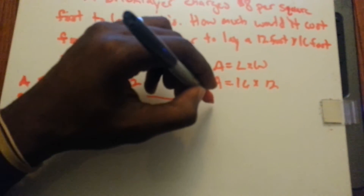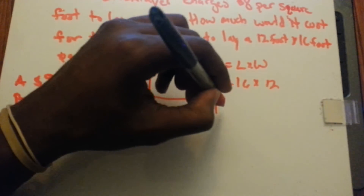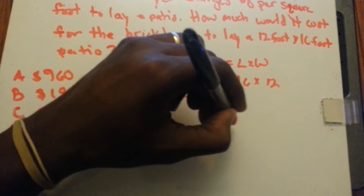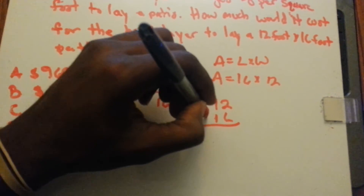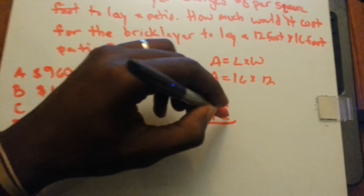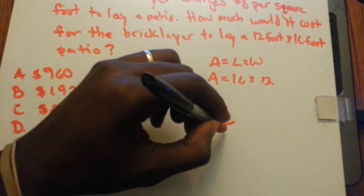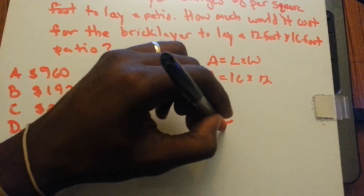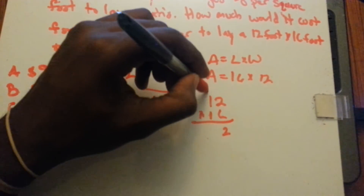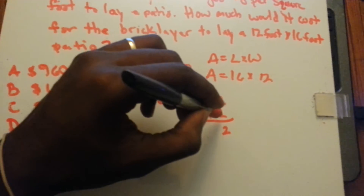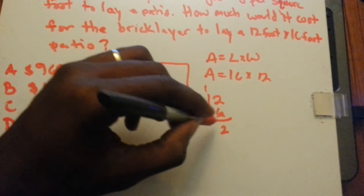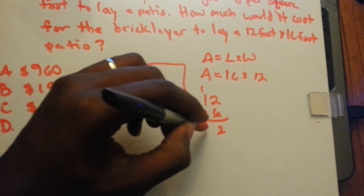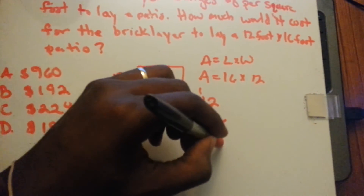So let's do that out. 12 times 16. 6 times 2 equals 12. Carry the 1. 6 times 1 is 6, plus 1 is 7.